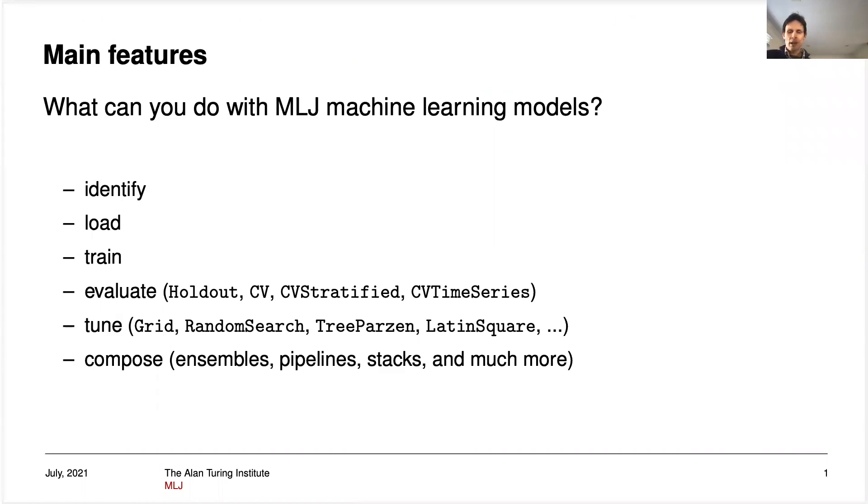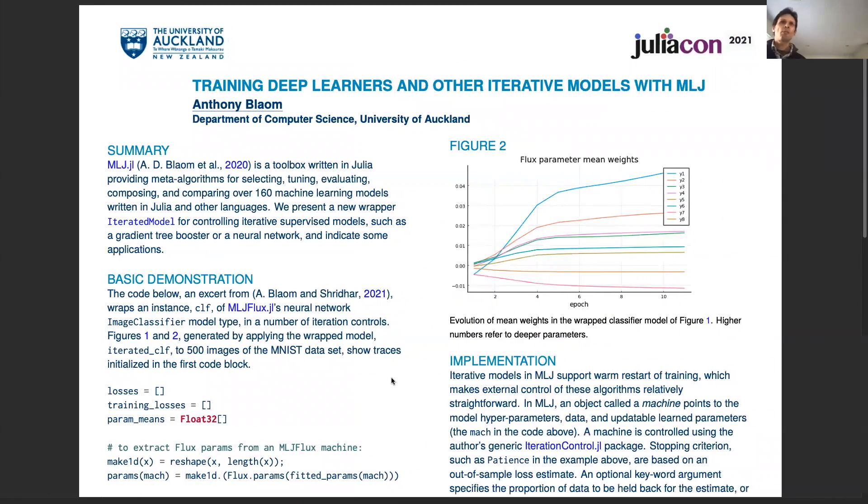Multiple models can be composed in interesting ways, such as in pipelines and stacks. What we're previewing in this poster is a new feature which allows you to wrap any iterative model, such as a neural network or gradient tree booster, in a control strategy.